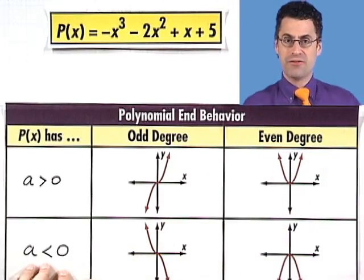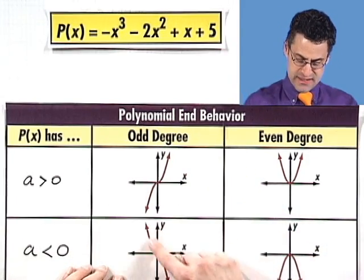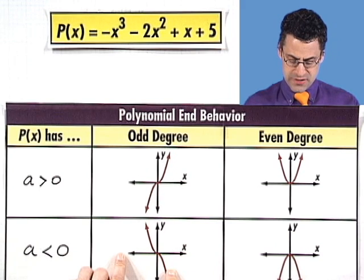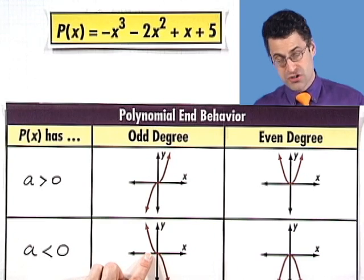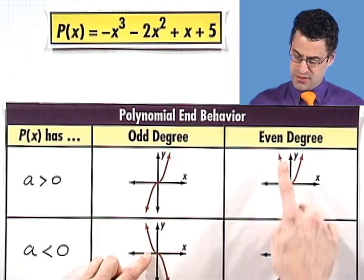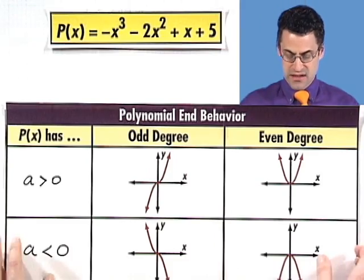However, if we have a leading coefficient that's negative, we see the flip of this over the x-axis. As we go off to the left, this goes to positive infinity. As we go off to the right, we're dropping to negative infinity. Similarly, with even degrees, we have a frowny face as we look toward the ends.